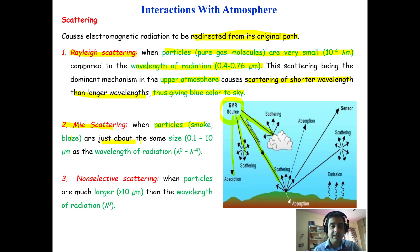The second type is Mie scattering, which occurs when particles like smoke and haze are about the same size as the wavelength of radiation — approximately 0.1 to 10 micrometers. The third type is non-selective scattering, which occurs when particles are much larger than 10 microns compared to the wavelength of the radiation.